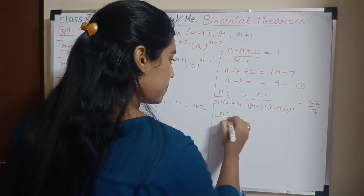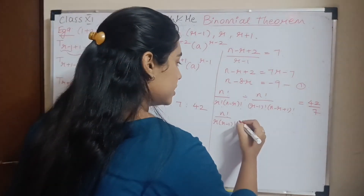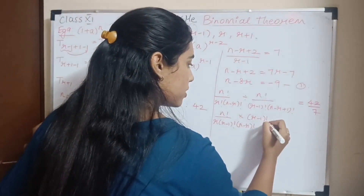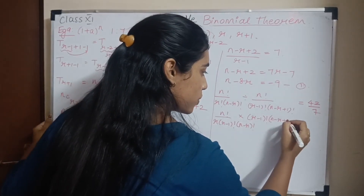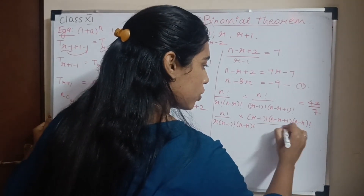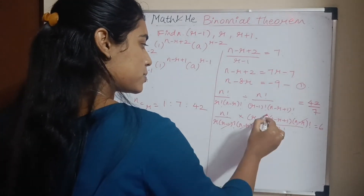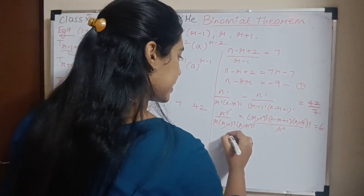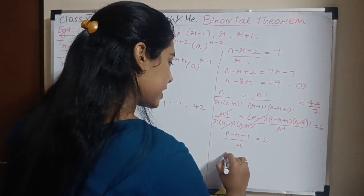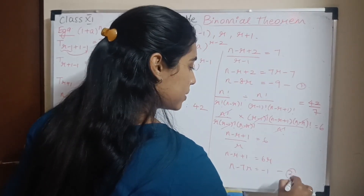After cancellation of n!, (r-1)!, and (n-r)!, I am left with (n-r+1) / r = 6. So n - r + 1 = 6r, giving n - 7r = -1. This is equation 2.